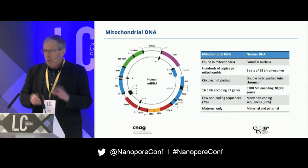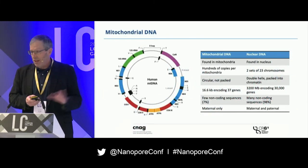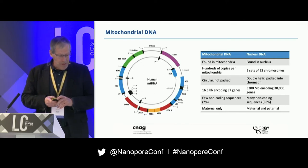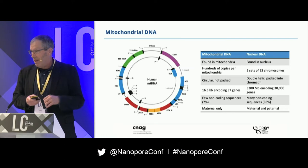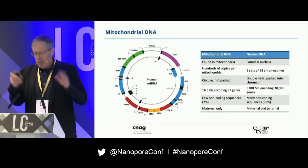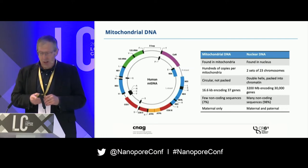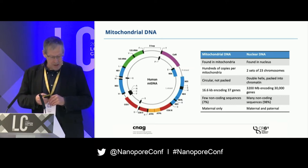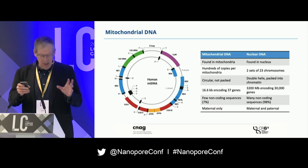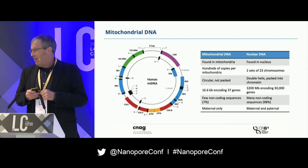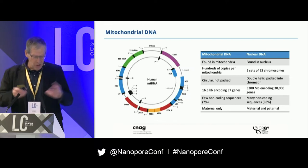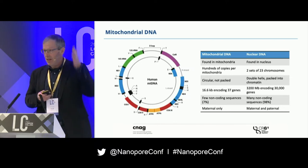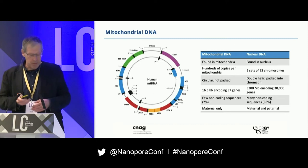By way of introduction, we've heard some things about mitochondrial DNA in the meeting so far. Just to remind you, it is a very particular piece of DNA that we have in our genome. It is circular. It is 16.6 kb. It has 37 very important genes. It is represented multiple times in each cell — not only as two copies, but sometimes hundreds, tissue-dependent — and it is inherited maternally. We get it from our mother.